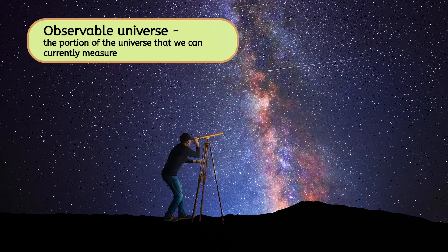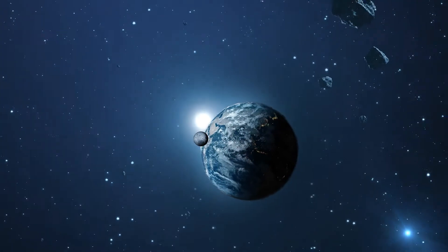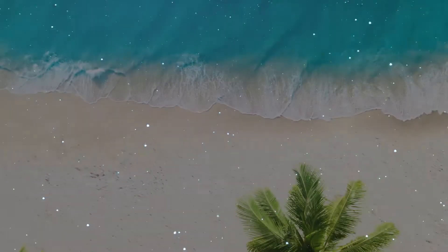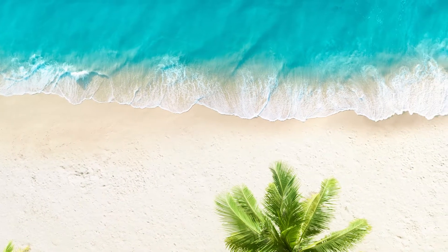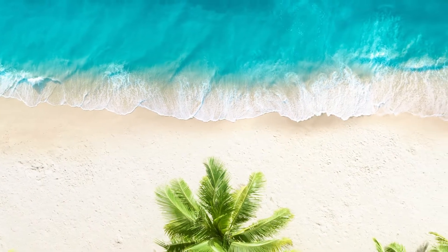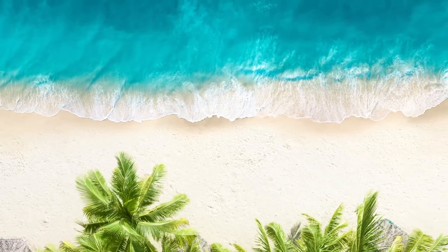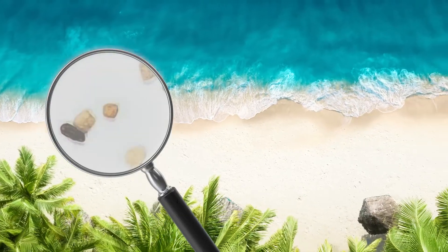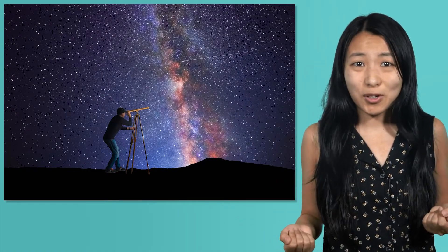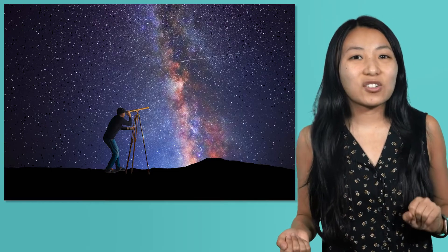The universe is so giant that we can only currently measure a portion of it known as the observable universe. Astronomers are very confident the universe is quite a bit larger than what they can currently observe, but aren't exactly sure how much larger. Using our grain of sand analogy — if our entire solar system has been shrunk down to one single grain of sand, the observable universe would be a beach over 23 million miles across. But the observable universe is only a part of the entire universe. Why do you think there is a limit to how far astronomers can observe?